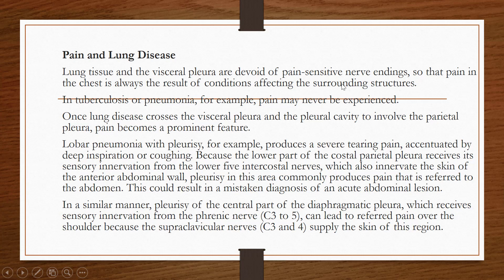If there is pain, it means there is some problem surrounding the lung tissue. In tuberculosis or pneumonia, for example, pain may never be experienced because the lung itself is involved. Once lung disease crosses the visceral pleura and the pleural cavity to involve the parietal pleura, pain becomes a prominent feature.